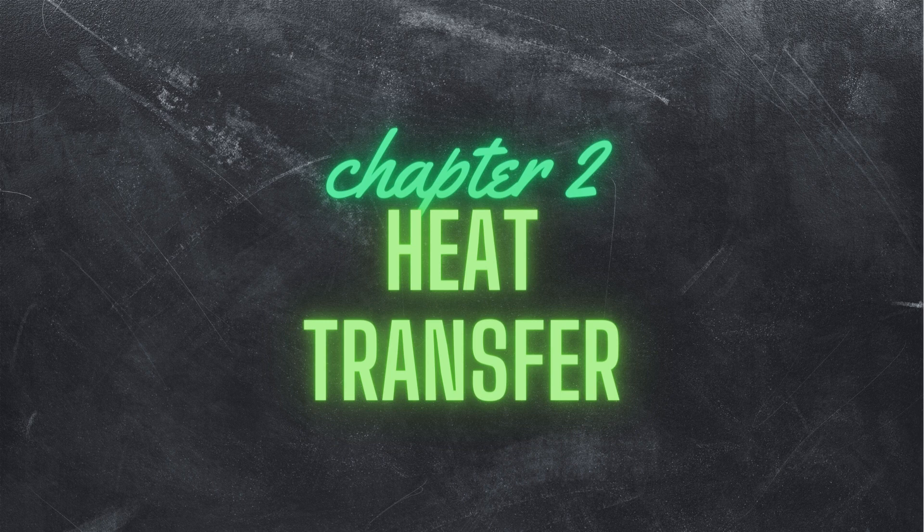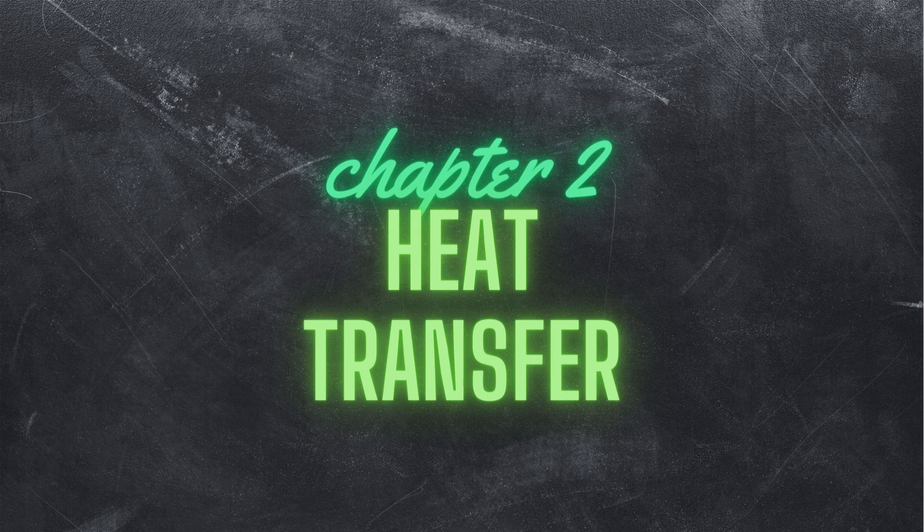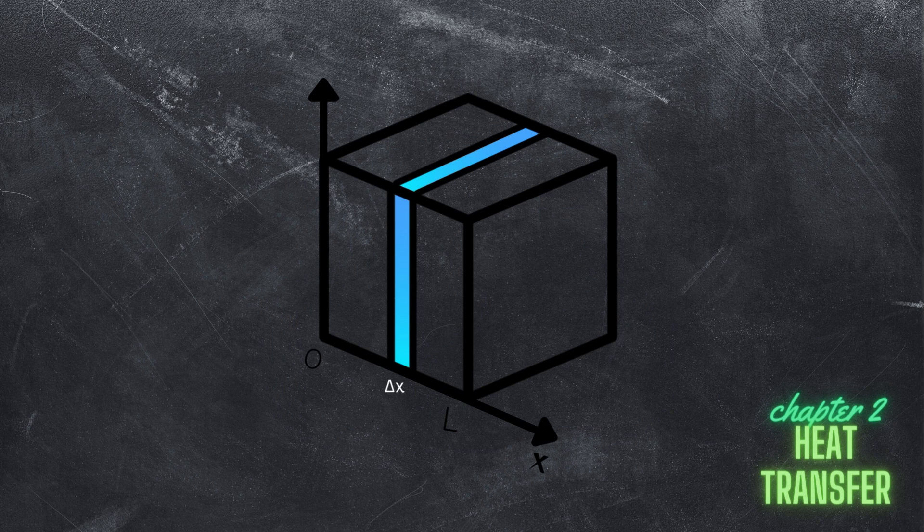Heat conduction through a large plane wall, such as the wall of a house, in these and many other geometries can be approximated as being one-dimensional, since heat conduction through these geometries will be dominant in one direction. Consider a thin element of thickness delta x in a large plane wall as shown here.